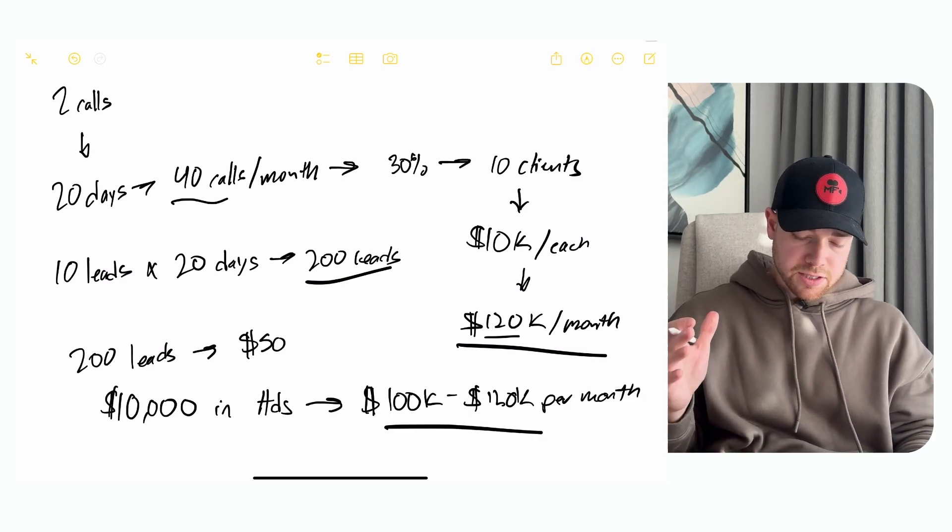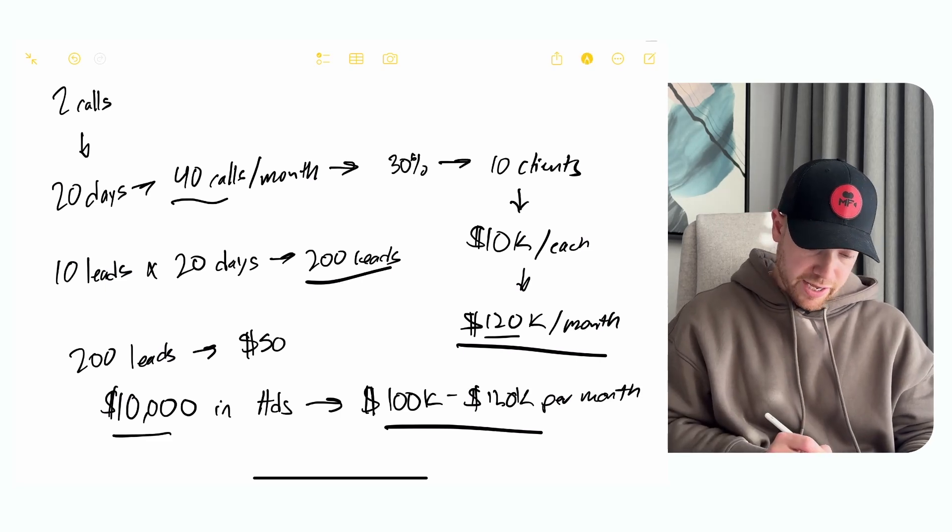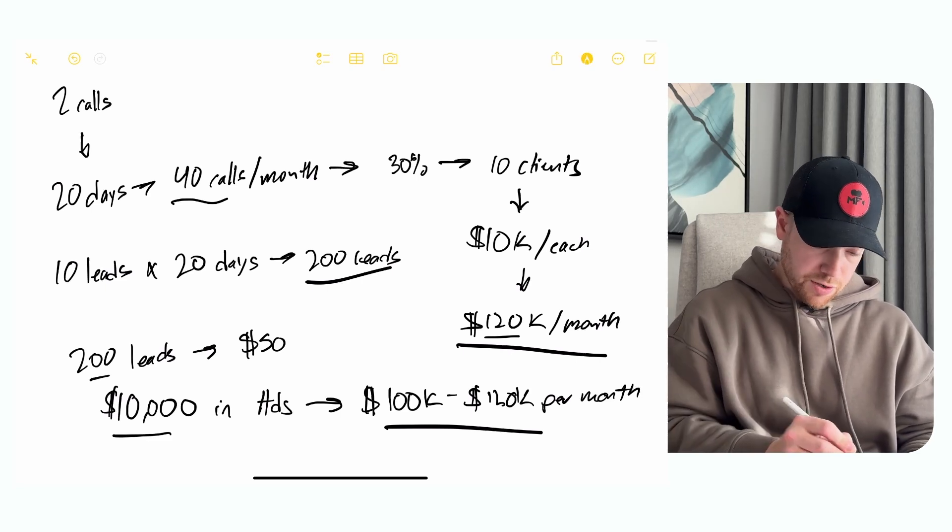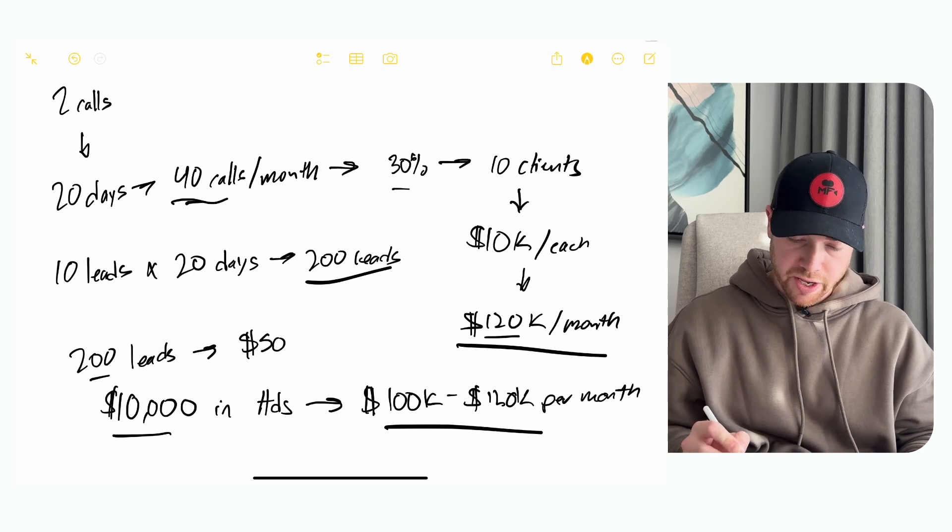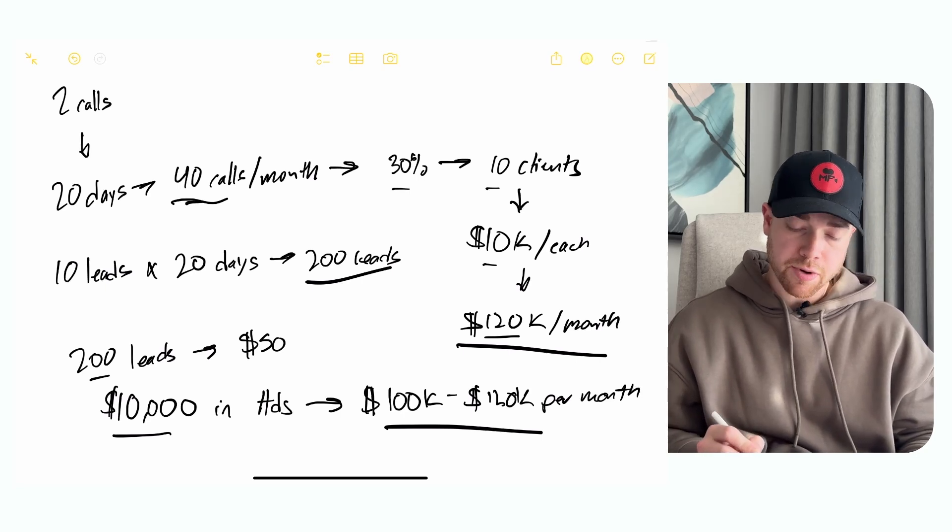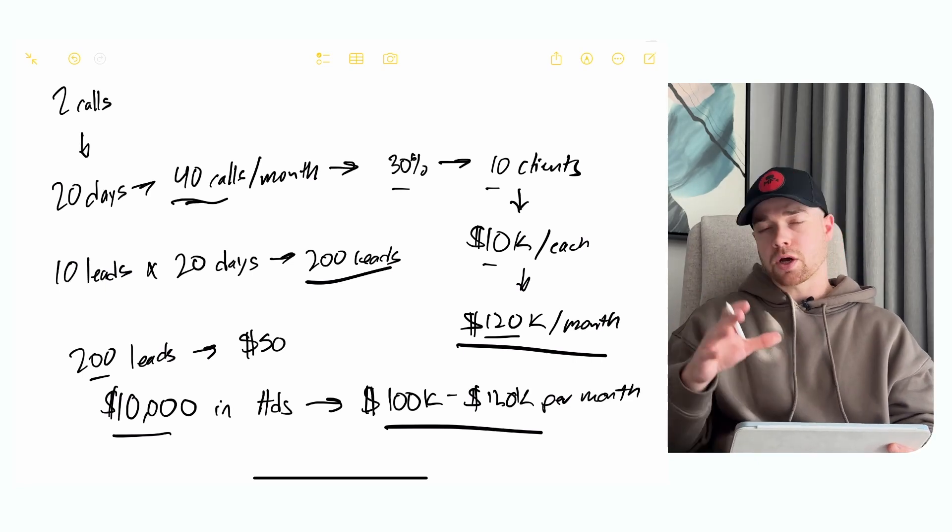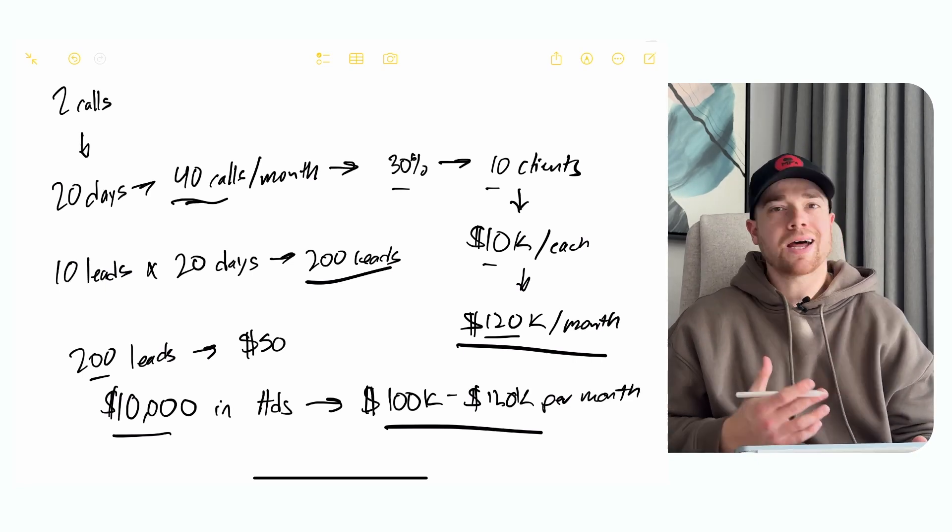So that is literally how you hit 100 to 120K per month: you spend this much in ads, you get 200 leads, you get 40 calls a month, you close at 30%, you have 10 clients at 10K each, that's 100K a month. Or if you close at 30%, then it's 12 clients at 10K each, that's $120,000 a month. And so it's not that complicated.